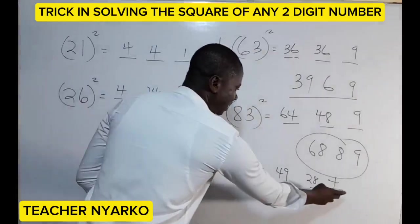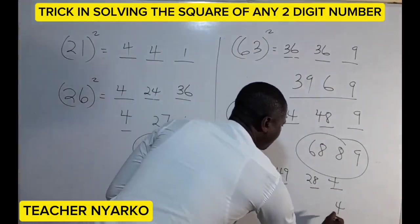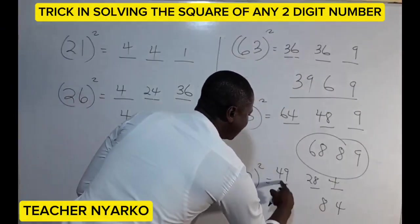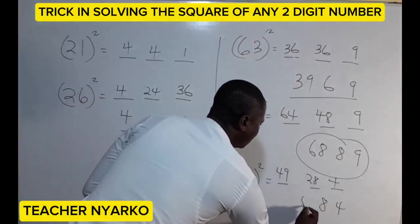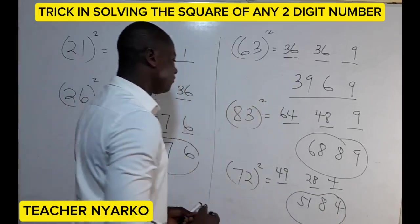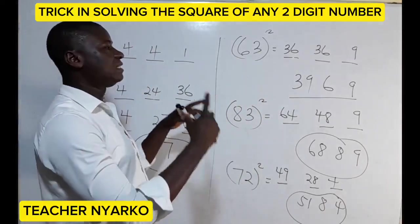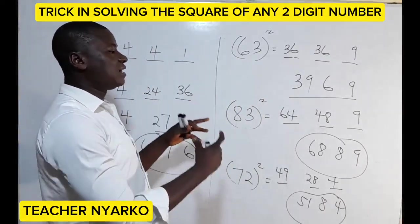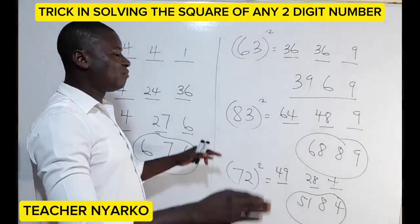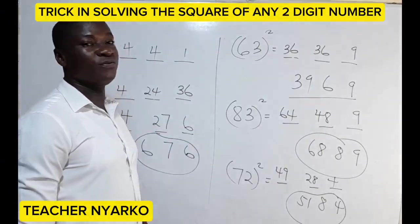We have single digits and double digits, so we reduce. Four stays here, eight comes down, and the two is added to give 51. So 5184 is the answer when you square 72. This is the general trick for squaring any two-digit number — try examples on your own and follow for more.